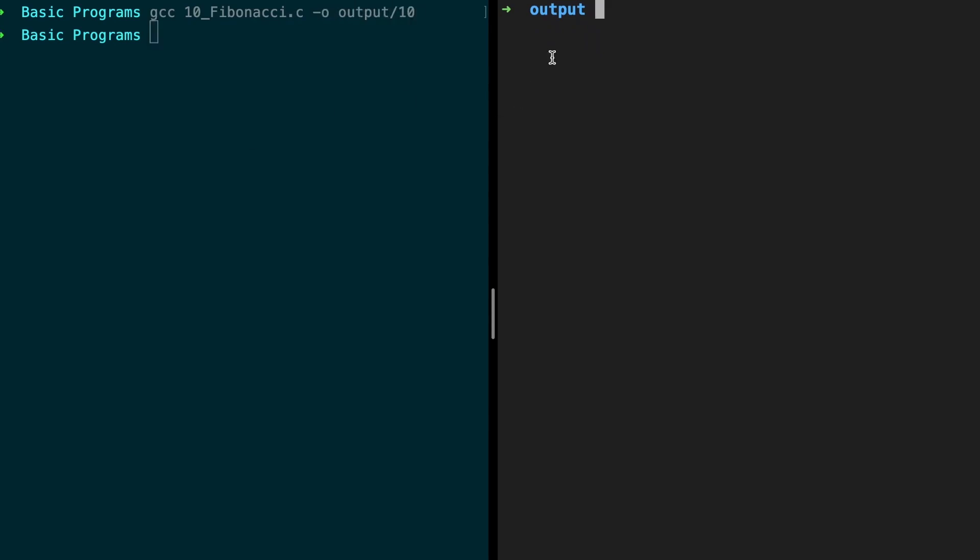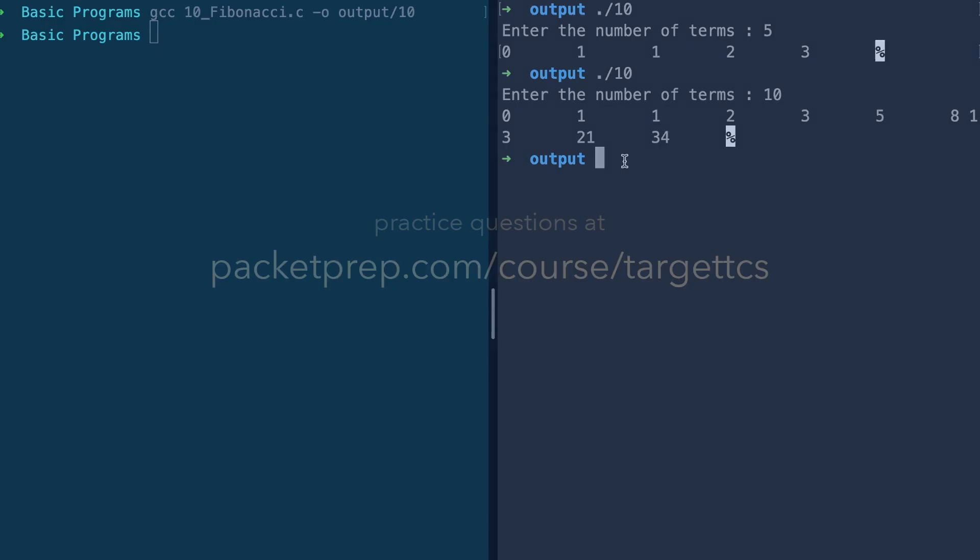Okay, no errors. Let's execute this. Let's go for five terms: zero, one, two, three. I think it's working. Let's try one more. Let's go for ten numbers. So one plus one is two, two plus three is five, three plus five is eight, eight plus five is thirteen, and going on. All right, it's working.